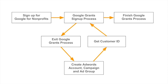Before we jump into the step-by-step Google Grants sign-up process, here's a high-level overview of what to expect. First, you're going to sign up for Google for Nonprofits. Once that's complete, you'll start the Google Grants sign-up process. About halfway through, you'll need to exit and create an AdWords account, because you need a customer ID that you can only get from AdWords. Once you have your customer ID, you can finish the Google Grants sign-up process.